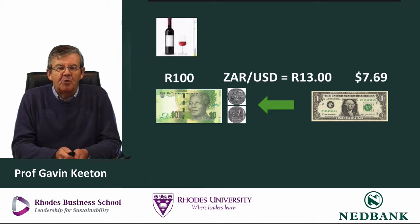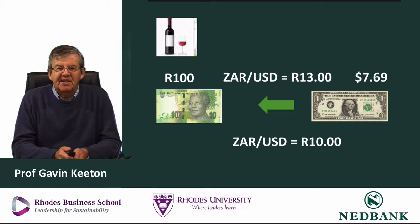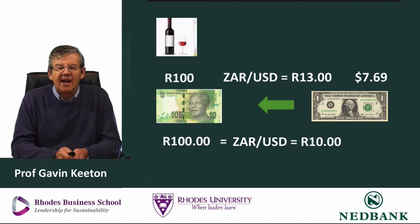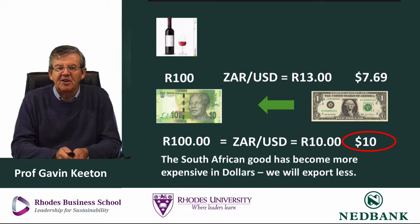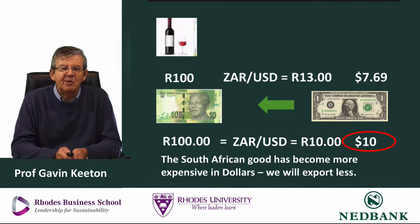For the foreigner who bought our bottle of wine for 100 rand and previously paid 7 dollars and 69 cents, the exchange rate is now 10 rand to the dollar. So for their one dollar they can now only get 10 rand instead of 13 rand. To buy 100 rand it will now cost them 10 dollars. The rand price is still 100 rand — there's been no change — but the dollar price has changed because the exchange rate changed. This will have a negative effect on our exports because for foreigners buying the goods we produce, things have become more expensive in dollar terms, and we will export less.